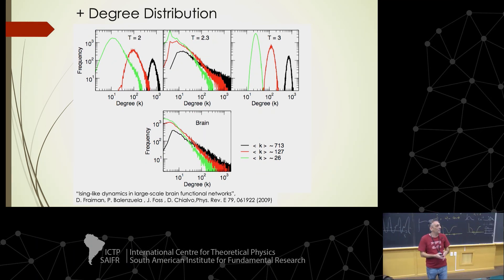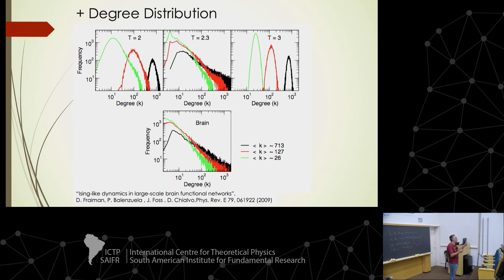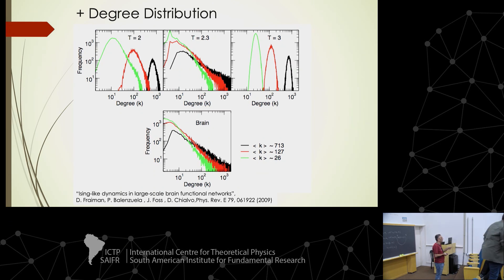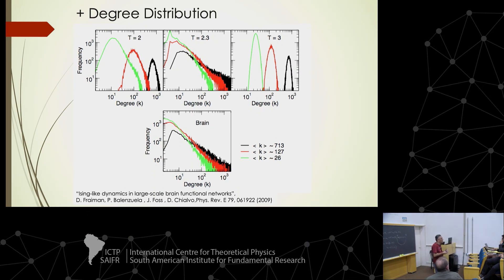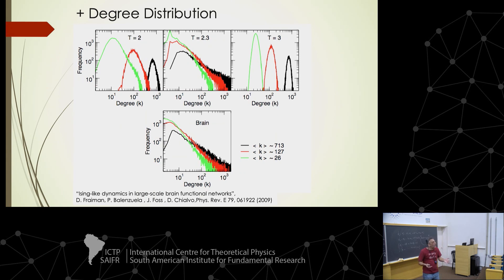Another question asks whether the Ising model could be simulated on top of the brain structural network rather than a 2D grid. The speaker says yes, that is possible. A related question is whether betweenness centrality was measured to analyze the network. The speaker says it was not done, but could be done — the analysis calculated degree distribution, clustering coefficient, and assortativity, and they were so happy with the results that they stopped there.